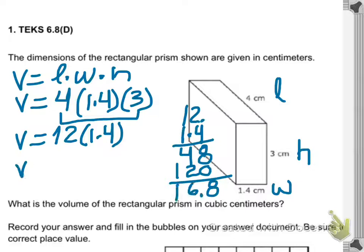Once they do that, they get the answer. The volume of that prism is 16.8 centimeters cubed.